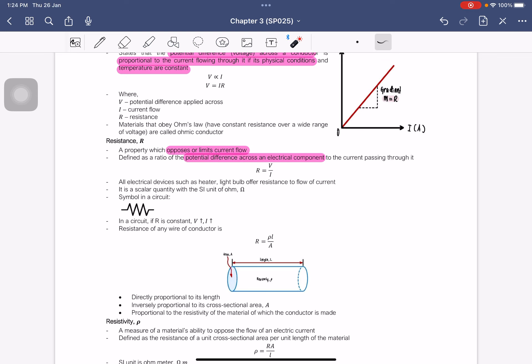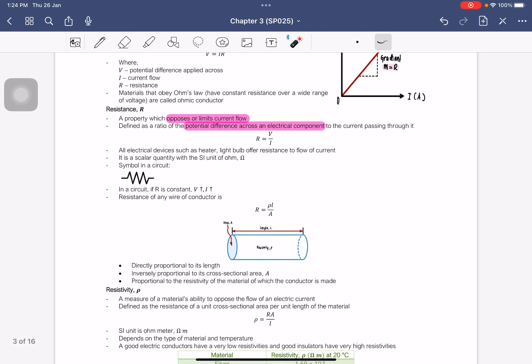So all electrical devices such as heater or light bulb, they offer resistance to flow of current. It is a scalar quantity with the unit of Ohm. So in a circuit, if the resistance is constant, we all know that the voltage and the current will increase. It is basically directly proportional to each other.